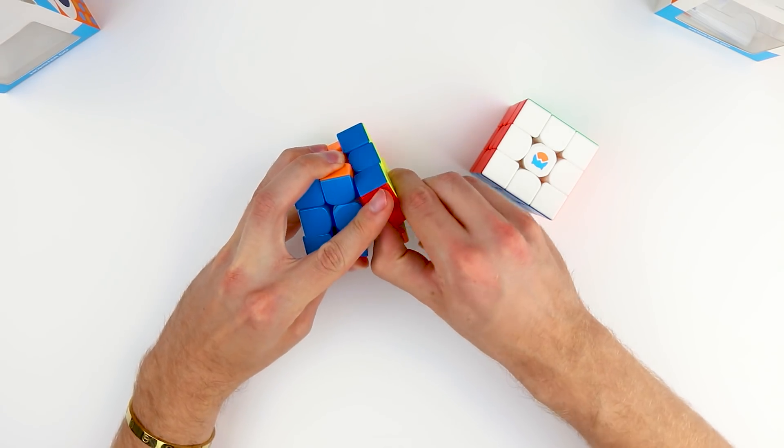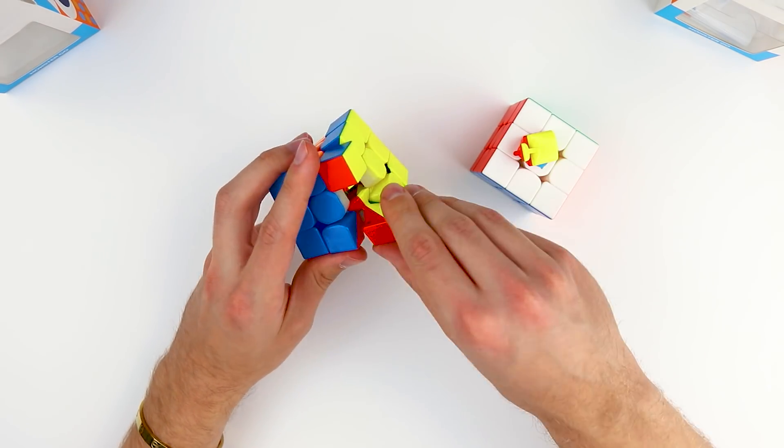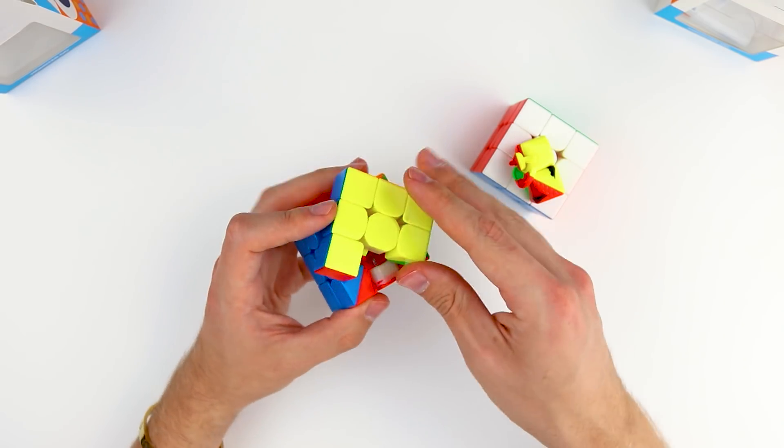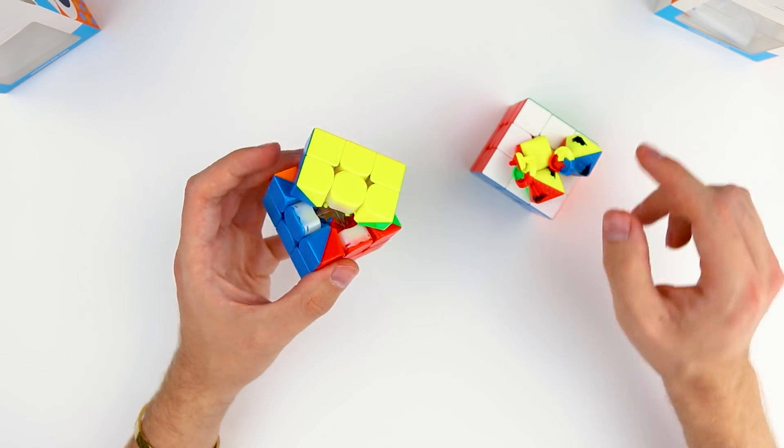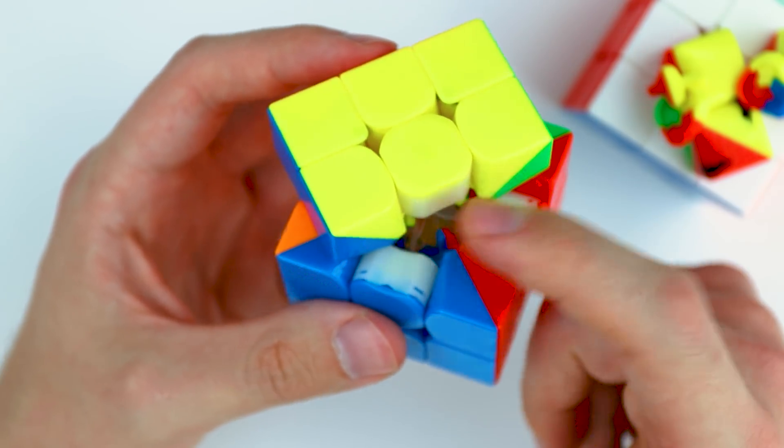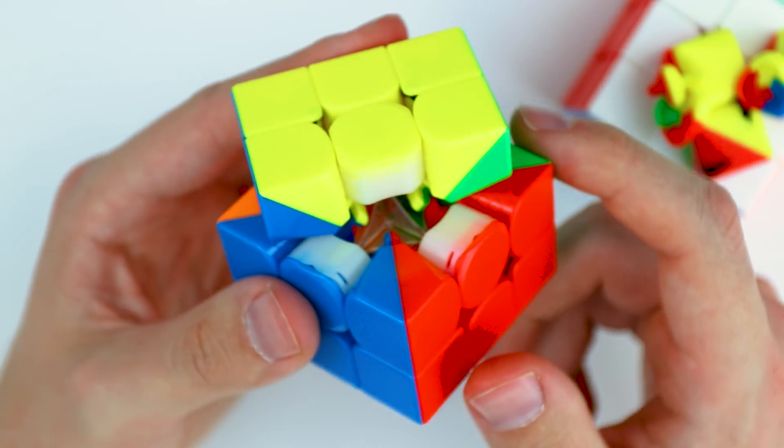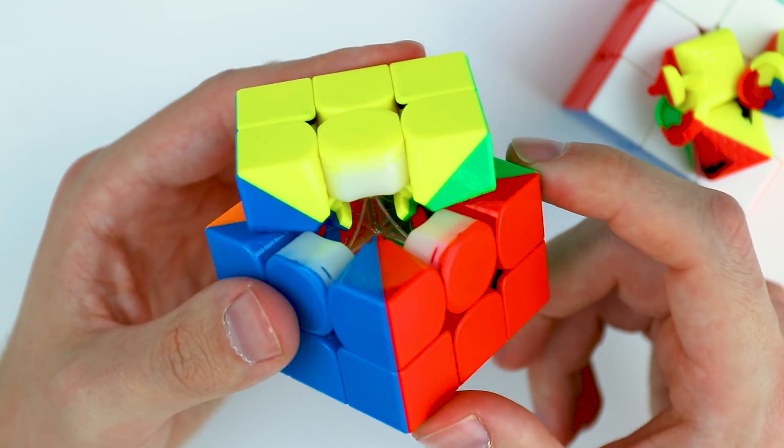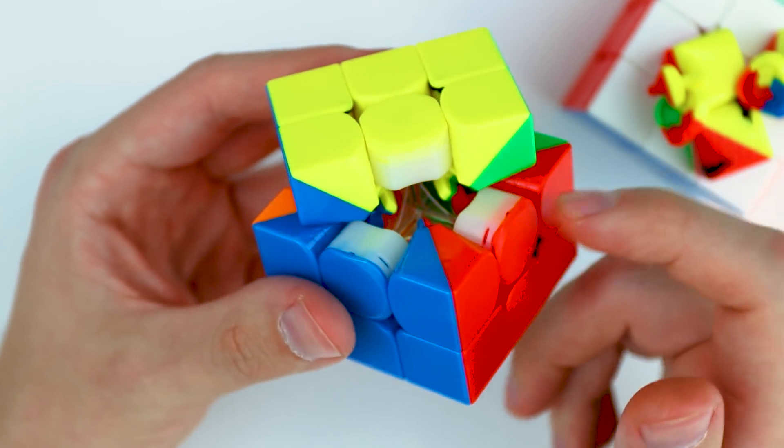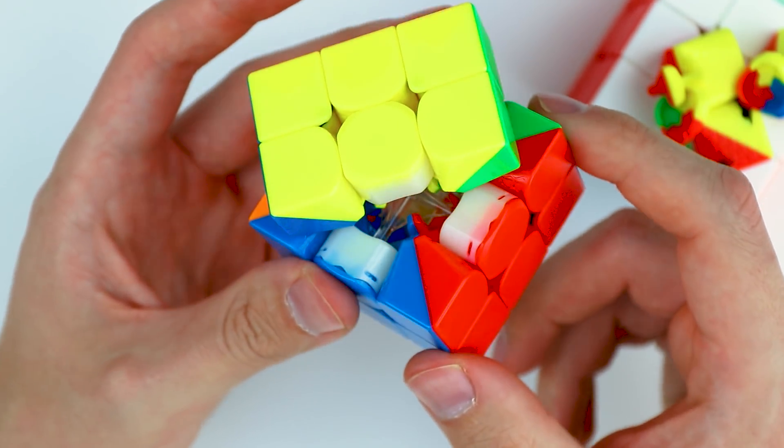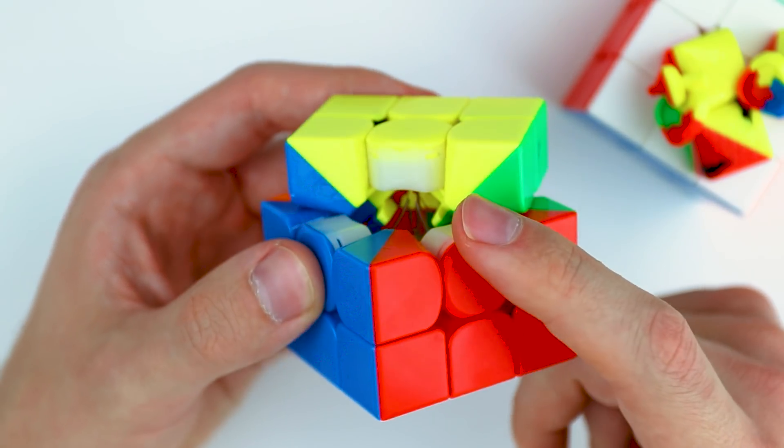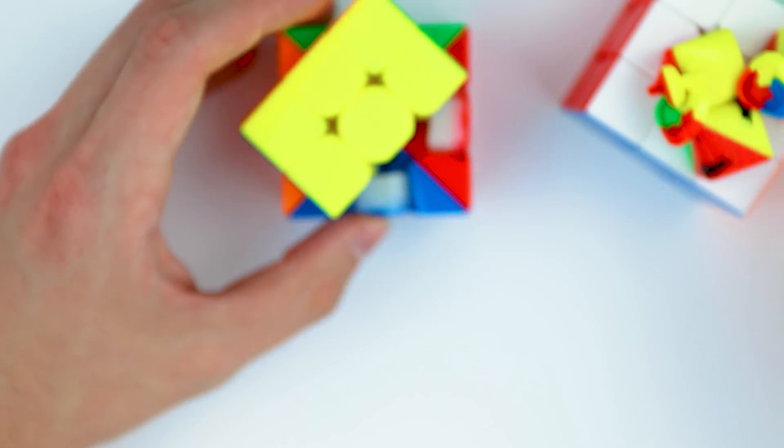Let's try to take a look at the pieces. Looking at the core, we have the clear plastic core. Not really too much to see here. A pretty simple center cap design that does lock into place, which is nice. You don't have to worry about those falling out.